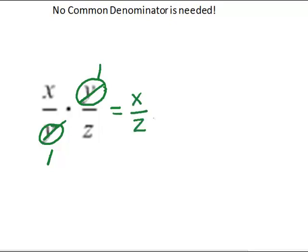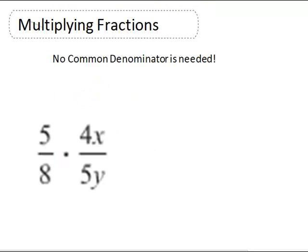For our last problem we've got letters and numbers - variables and coefficients. 5y is the same as 5 times y, so we can reduce this 5 with that 5, leaving a y below and a 1 above.